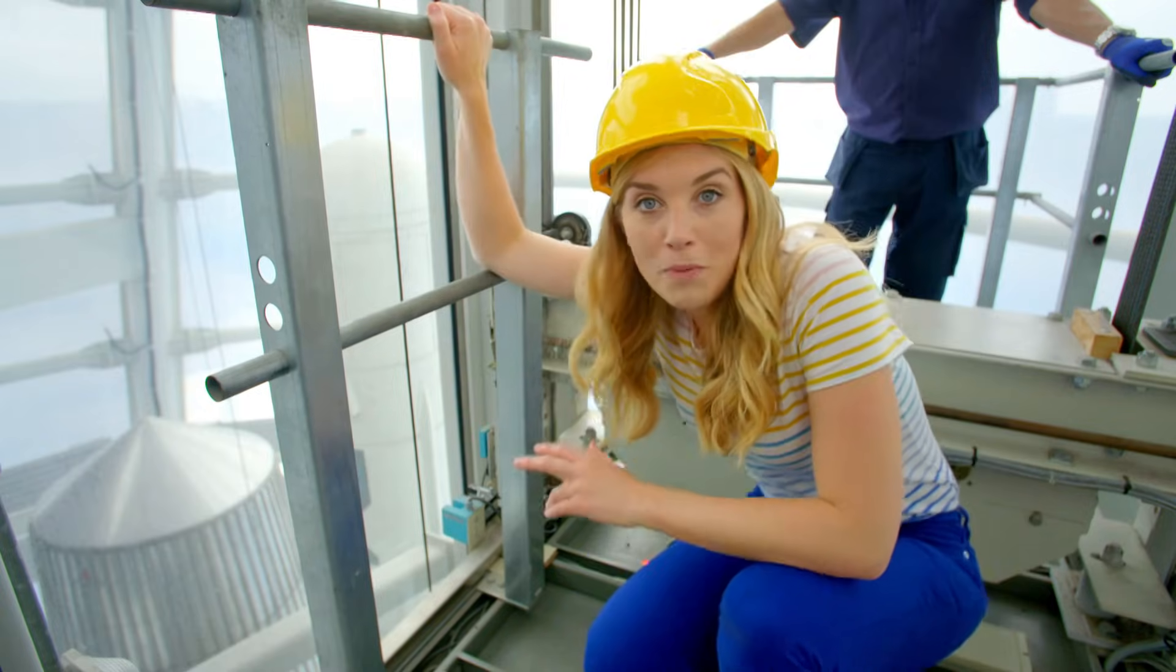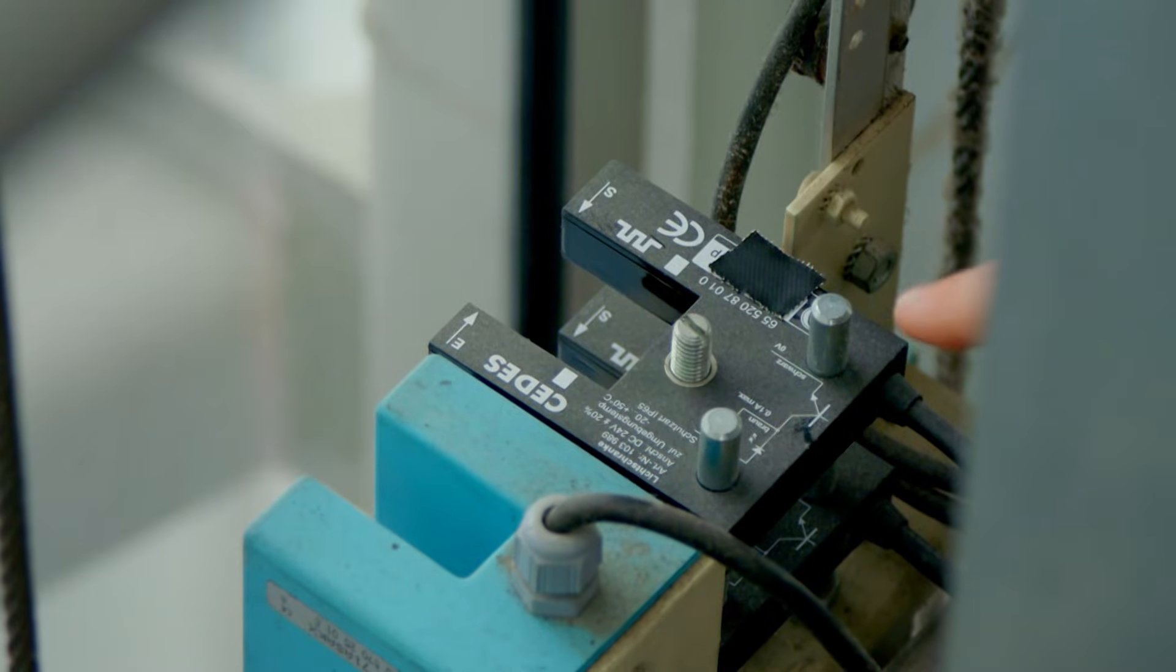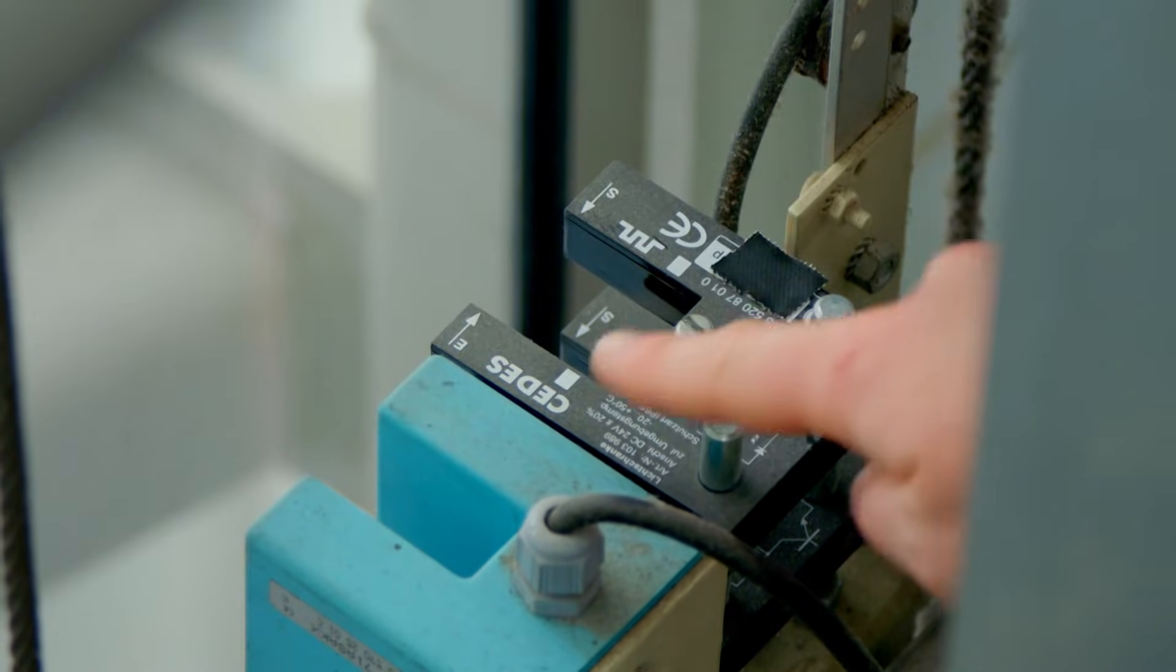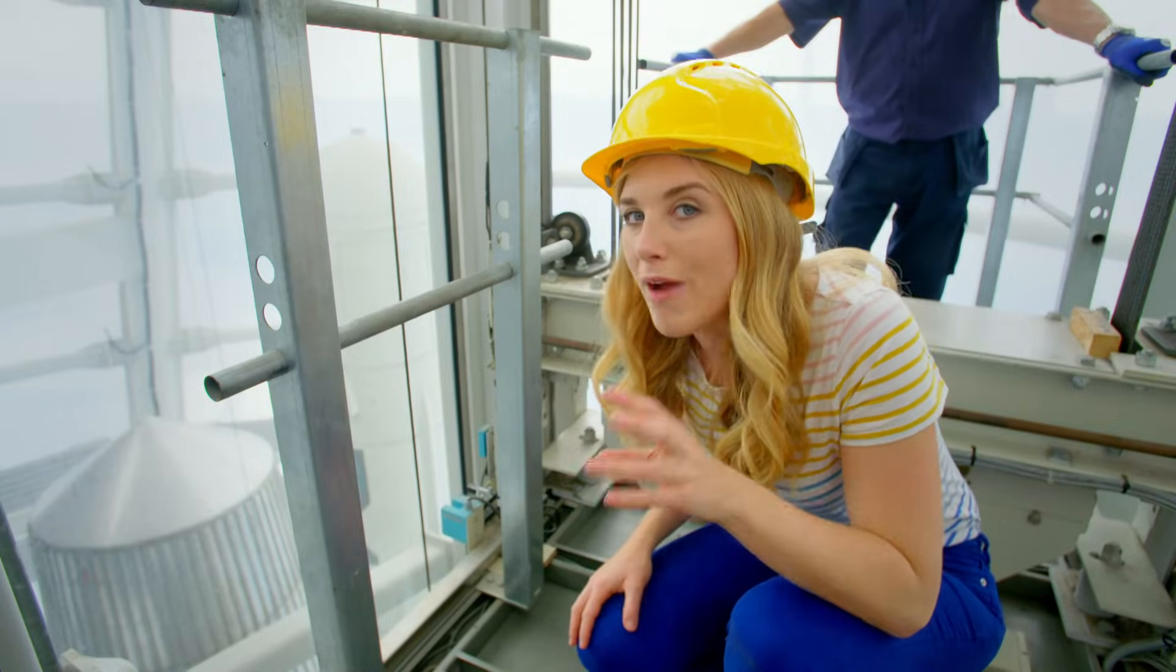But how does the lift car know when to stop? On the top of each lift car, there's something called a sensor, just here. And the sensor sends an invisible light between these two points. It's called infrared light.